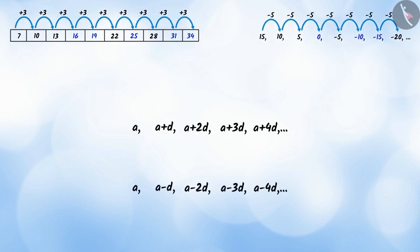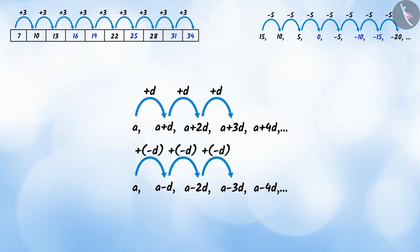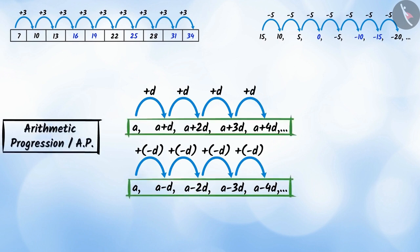Such a list of numbers, where each term except the first term is obtained by adding a certain number to the previous term, is called an arithmetic progression AP.